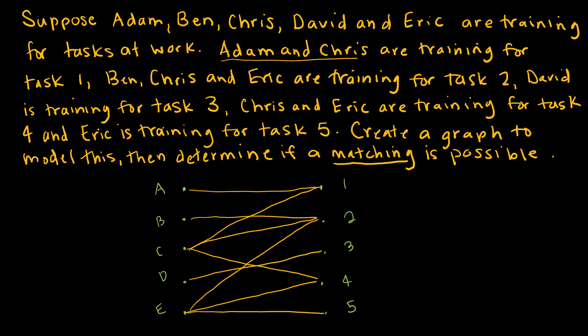So if I were just modeling this with a graph, I am done. Now it says determine if a matching is possible. And for matching to be possible, what I'm looking at is can I assign Adam, Ben, Chris, David, and Eric each one task so that each task gets done, and obviously I have a well-trained person for each of those.